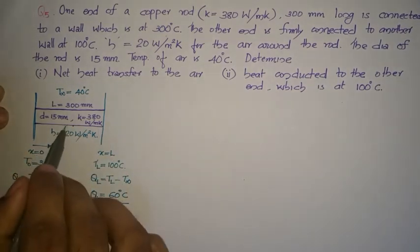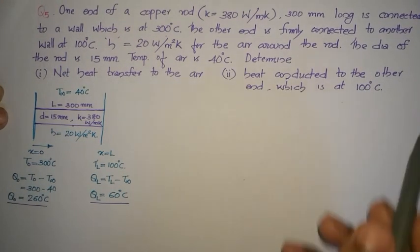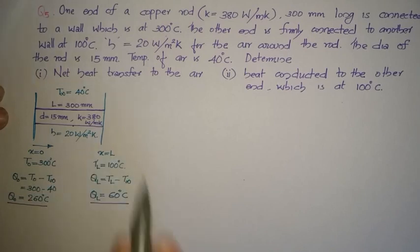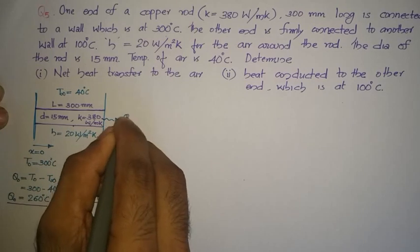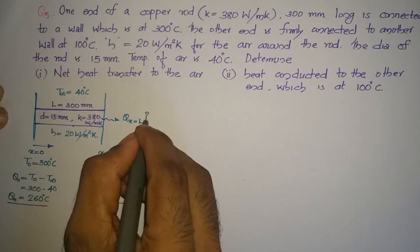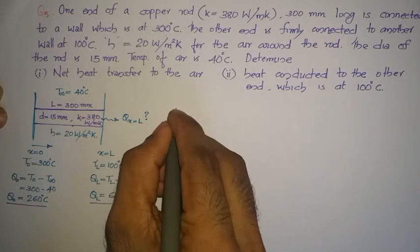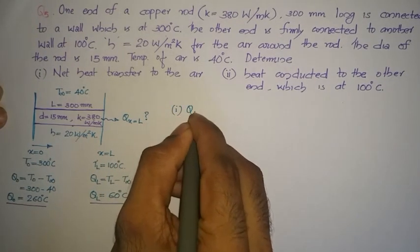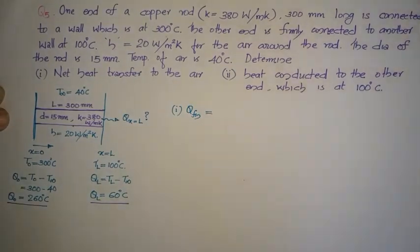We have to find the net heat transferred to the air — that is, the heat transferred by the fin — and also the heat conducted to the other end at x equal to L (the 100°C end). From the data book for Case 4 fins, the heat transferred expression is: Q_fin = √(HPK) × [(T₀ − T∞) + (T_L − T∞) × cosh(mL) − 1] / sinh(mL).